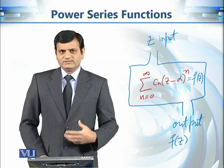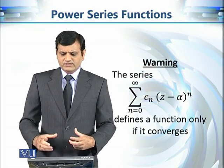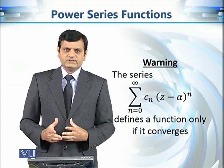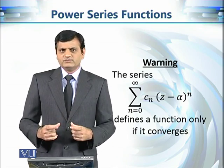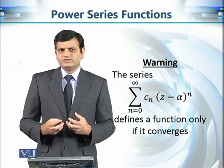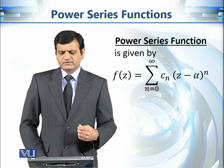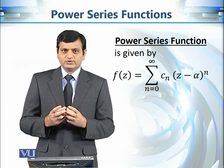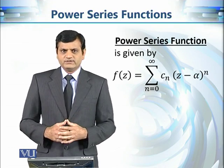The series defines a function only when it converges. If for some particular value of z the series is not converging — becoming infinity — then we cannot say that z belongs to the domain of the function. So a power series function has two parts in its definition: the rule for deciding the image, and the domain of the function.